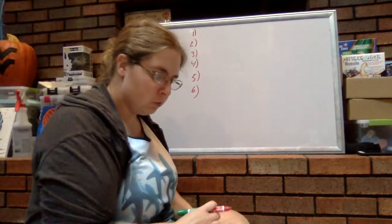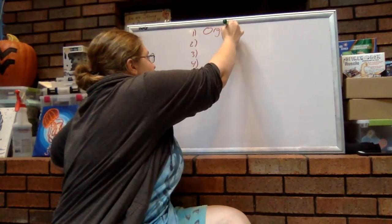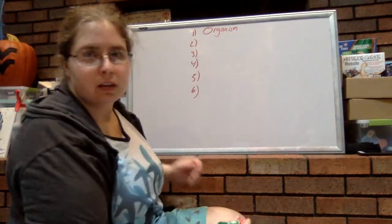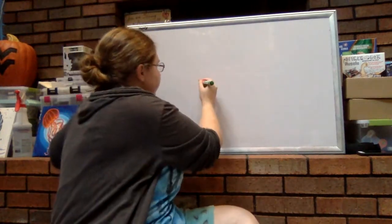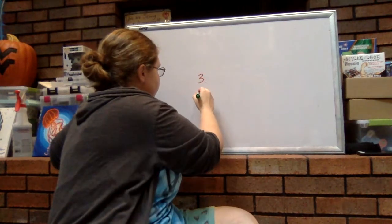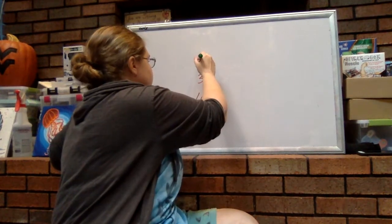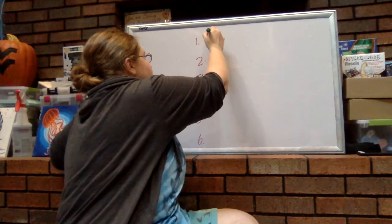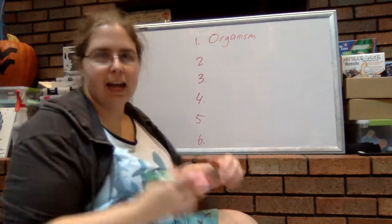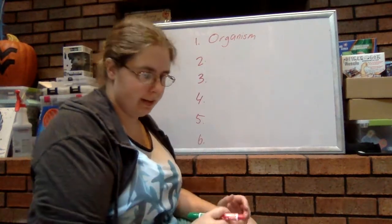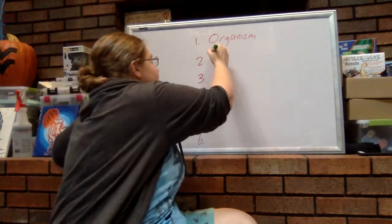Now the first one we're going to start with is the actual organism. We have organism. So this is the one individual living thing. Now if you have a bunch of similar organisms living in the same area, we call that a population.